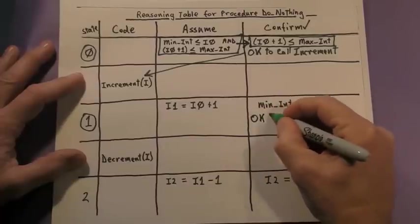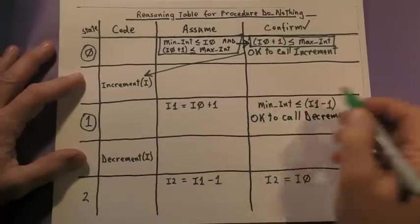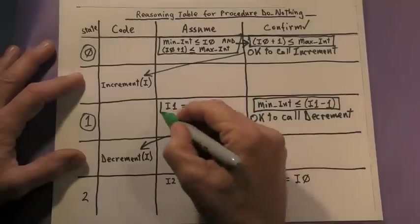Likewise, in state 1, we have to verify that it is okay to call the decrement operation. Again, we're going to use the premises to prove the conclusion.